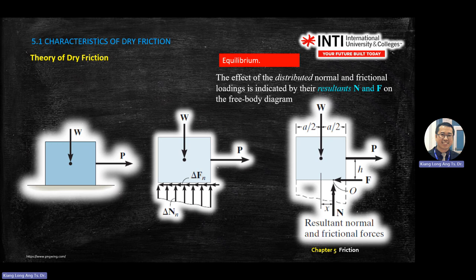Tip over means roll over. If you focus on point O at the corner edge, there will be an imbalance of moment. Forces give you translation — left, right, up, down — but when you take moments about a point, F times D generates a moment. At point O, force P rotates clockwise, weight W rotates anticlockwise, and the normal force creates a clockwise moment. Friction creates no moment about O because its moment arm D is zero.